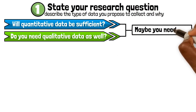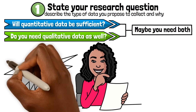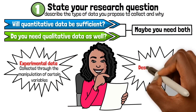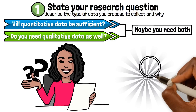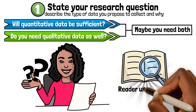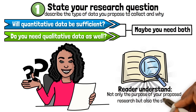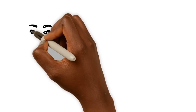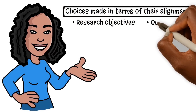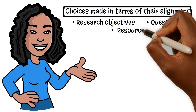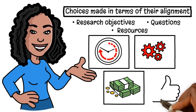Maybe you need both. Additionally, consider whether you'll be using experimental data collected through the manipulation of certain variables, or simply descriptive data based on observations. Will you utilise any secondary data? These details are important in helping the reader understand not only the purpose of your proposed research, but also the steps you plan to take in conducting it. You should also justify the choices made in terms of their alignment with the research objectives, questions, and resources available, such as time, research team skills and funds.